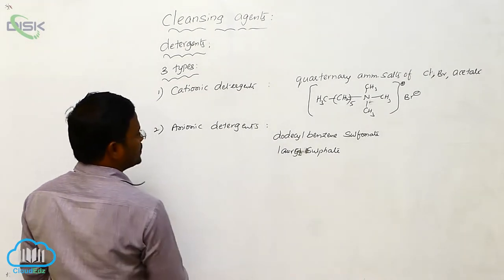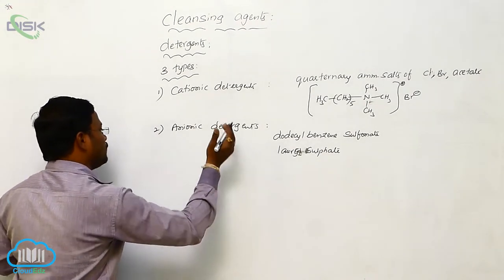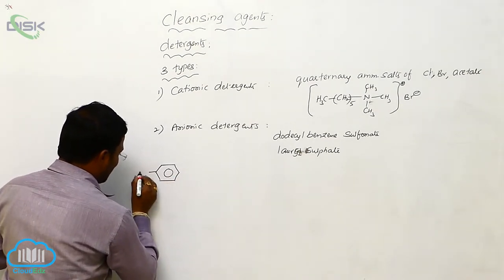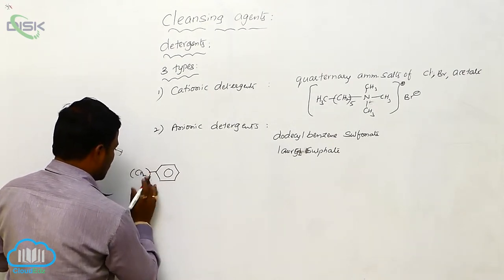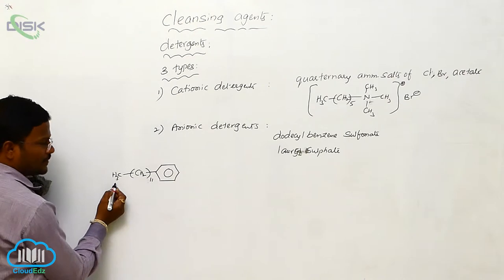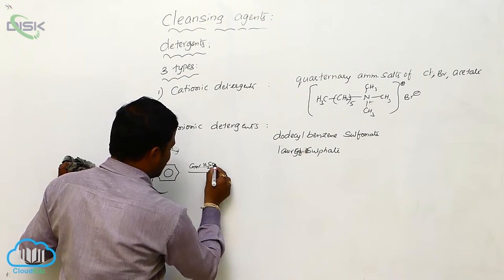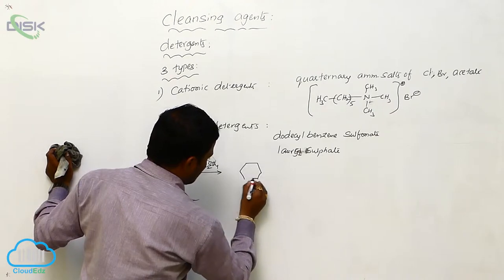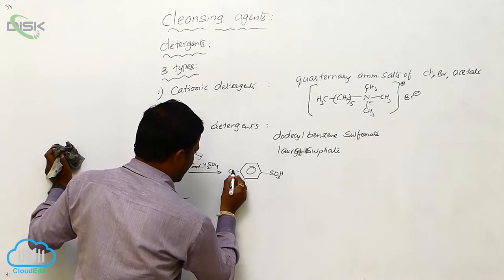Let us have the preparation of this dodecylbenzene sulfonate, which can be used as anionic detergents. First, the dodecylbenzene. What is dodeca means? 12 carbons. Here, 11 connected in a chain where the last one CH3, 11 plus 1, 12. When they participate sulfonation reaction when treated with concentrated sulfuric acid, the electrophilic substitution takes place at para position and produces CH2 taken 11.